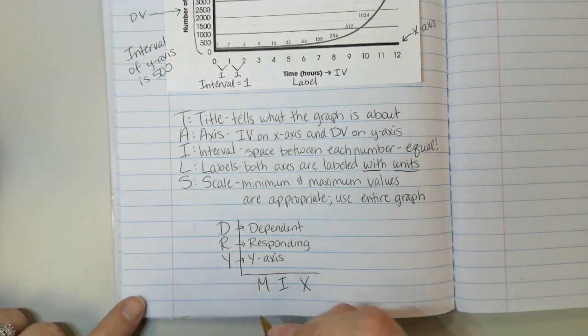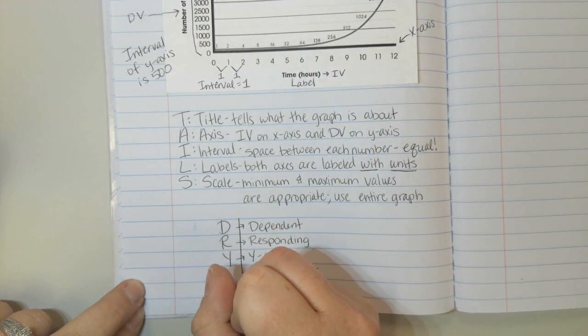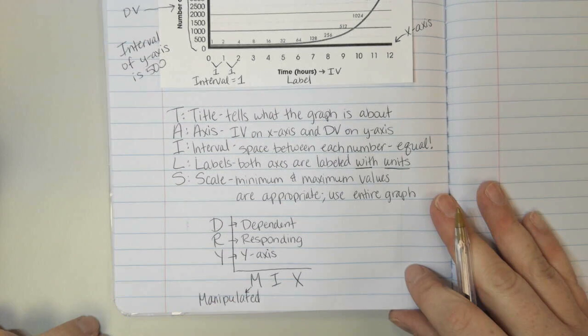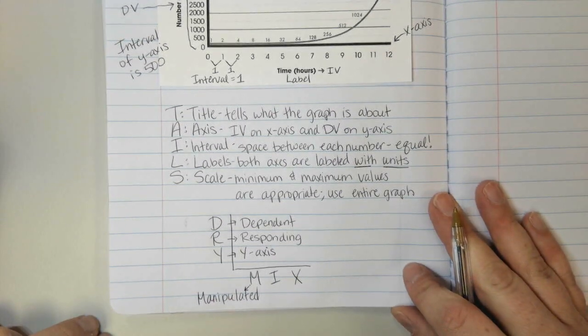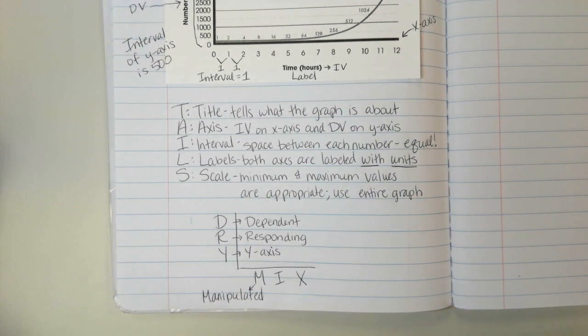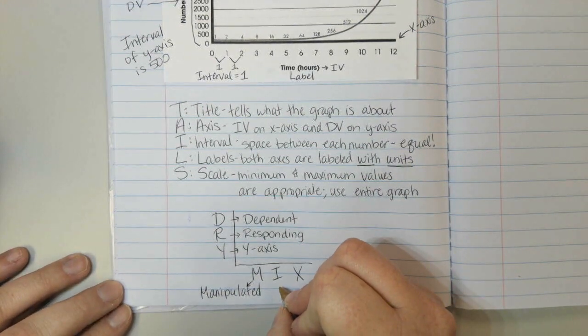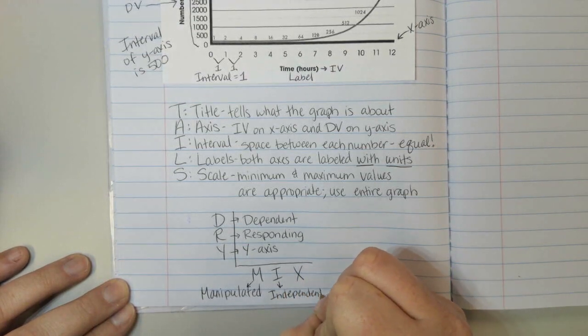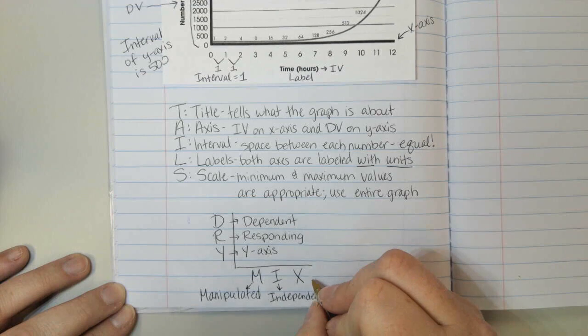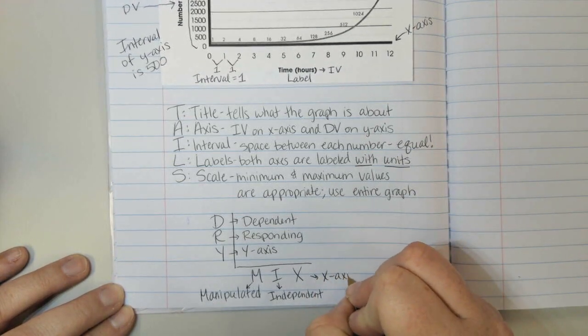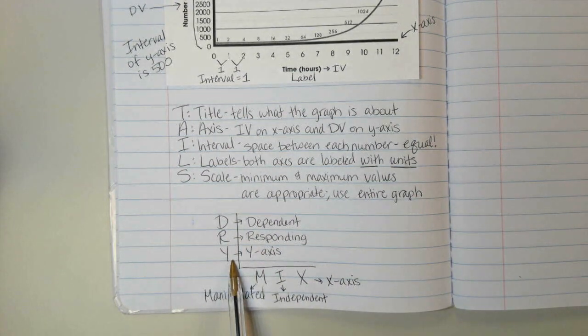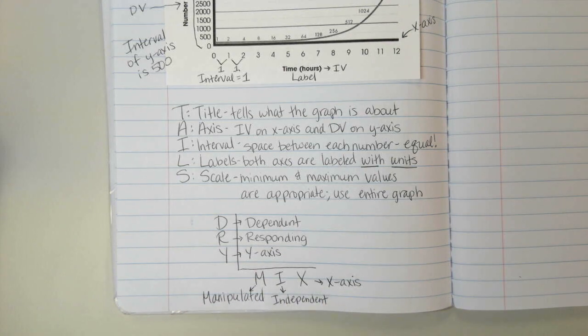Now across the bottom, the M stands for manipulated. Manipulated means changed. That's the variable that the scientist, or you, are changing on purpose. The I stands for independent. That's our independent variable. And then the X is the X-axis. So we can think of dry: the D and the Y go together for dependent Y-axis. And with mix, the I and the X go together. I for independent variable, X for X-axis.